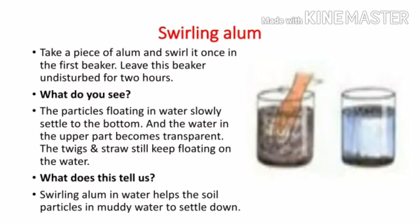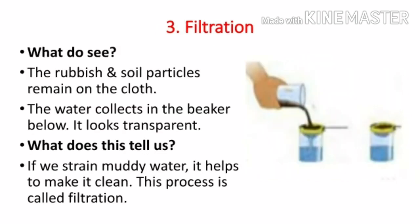The second method is swirling alum. Take a piece of alum and swirl it in the water in the first beaker, then leave the beaker undisturbed for two or three hours. Swirling alum in water helps the soil particles in muddy water to settle down.